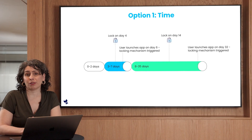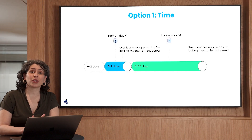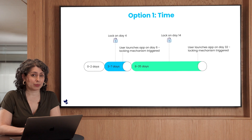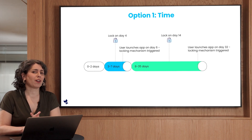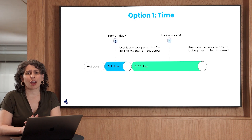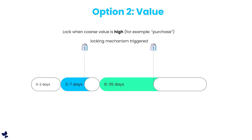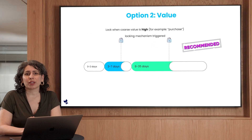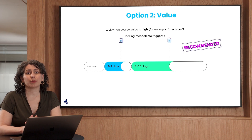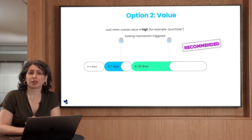But the problem with lock window is that for it to work, the user has to have already launched the app. So let's say you decide to lock the measurement window on day 5 and the user launches the app on day 6 — the lock mechanism would only be triggered from that point. The second option is to lock when the coarse value is high, like when a user makes a purchase. This ensures you don't waste time waiting for the window to close while avoiding a user needing to open the app to trigger the locking mechanism in the first place.